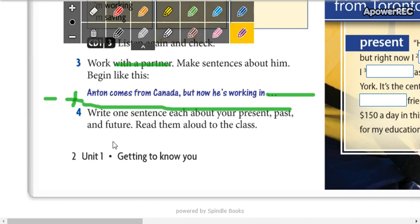And then, you write three sentences about you. One sentence about your present, one sentence about your past, and one sentence about your future.